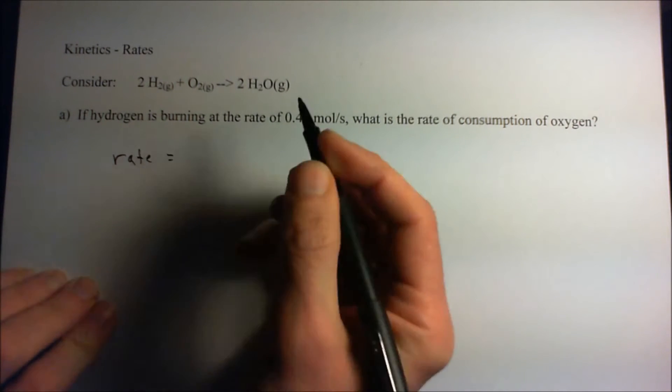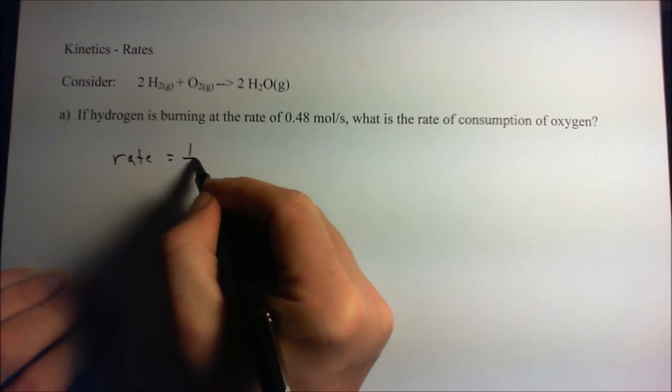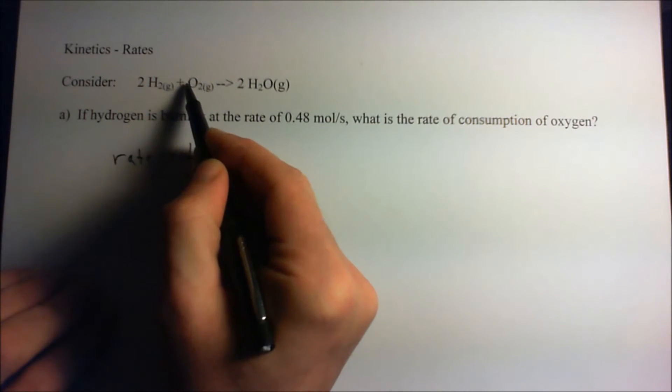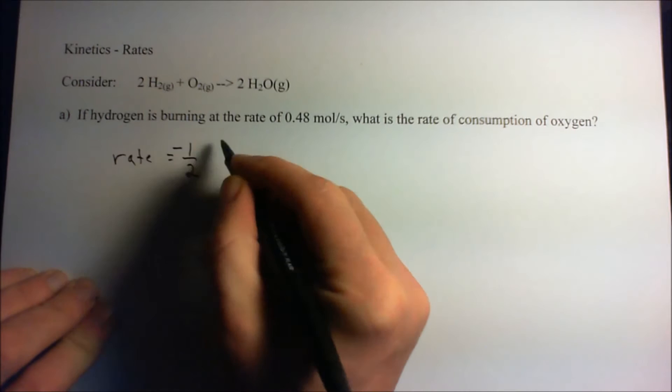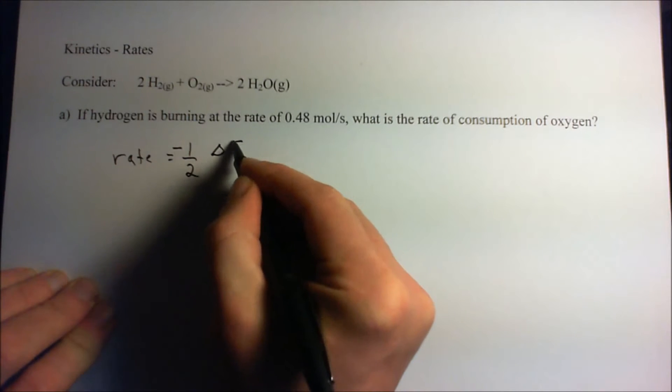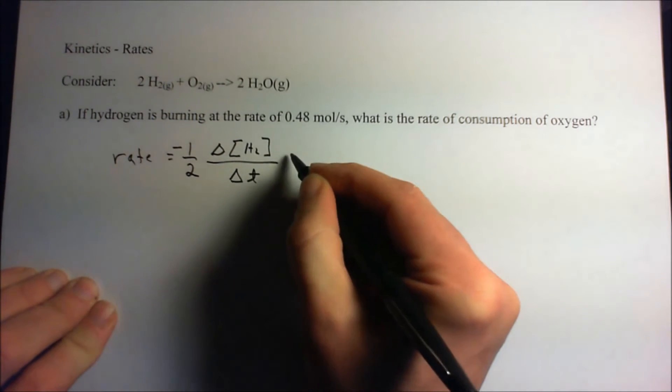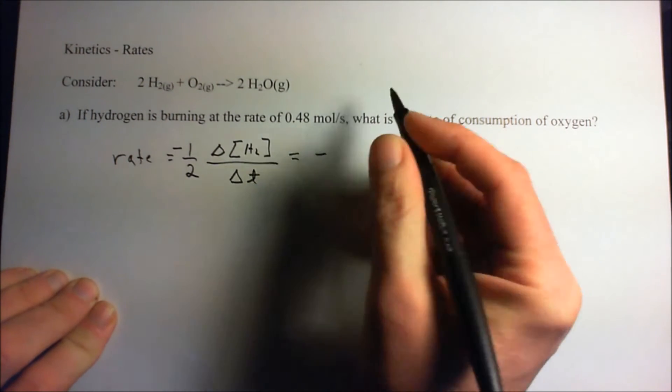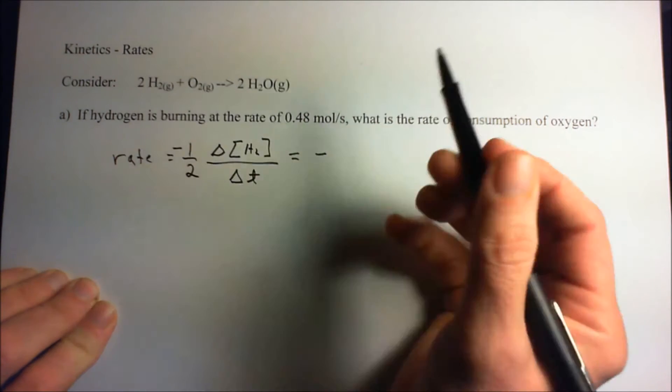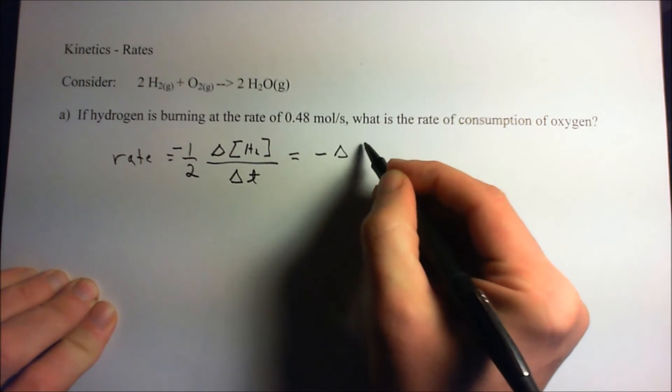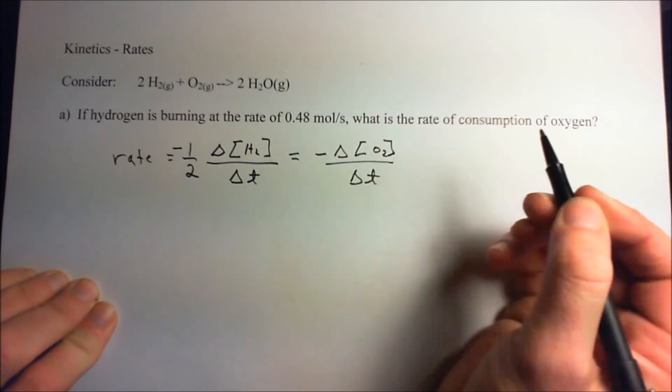The rate is we take this prefix here and we take the reciprocal, so that's one-half and that's one over one, and it's minus because it's consumption. That's minus one-half the change in concentration of hydrogen with respect to time, and that's equal to minus one over one, we won't write down the one over one, but that's equal to the change of oxygen with respect to time as well.